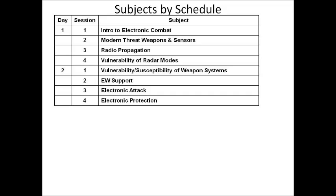Then we talk about the three areas of electronic warfare. Electronic support, which is the listening part of EW. Electronic attack, which is doing something about it — jamming, chaff, flares, and so on — to reduce the effectiveness of enemy weapons. And then there's electronic protection, which does not protect a platform; it protects friendly sensors against enemy jamming.